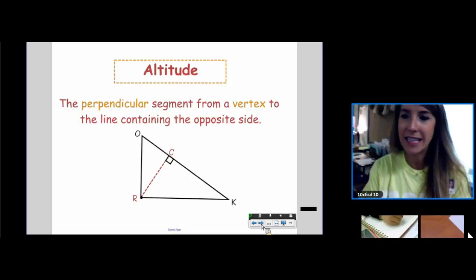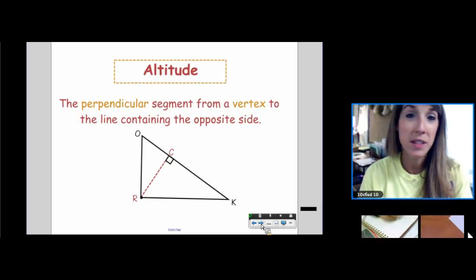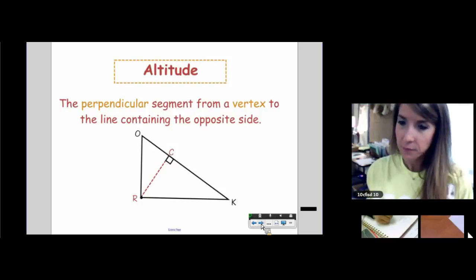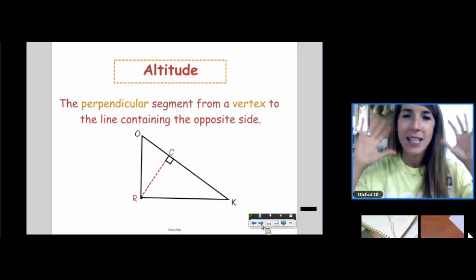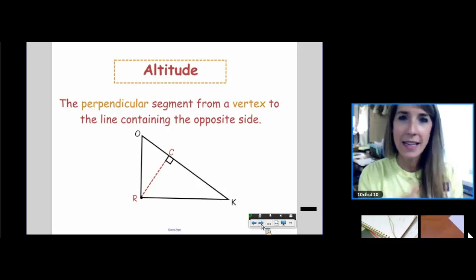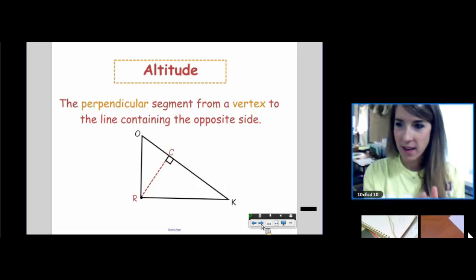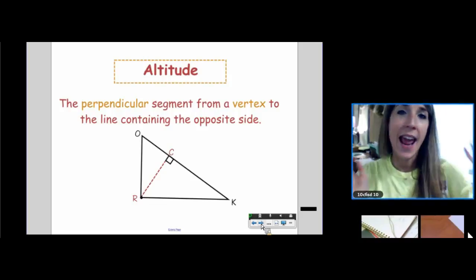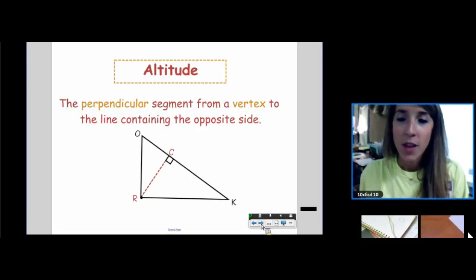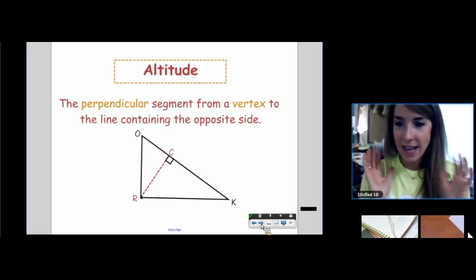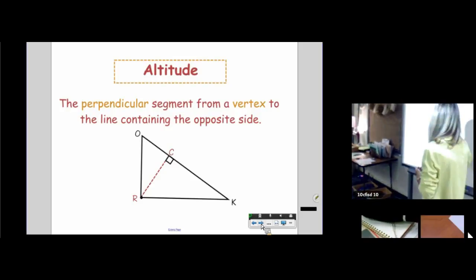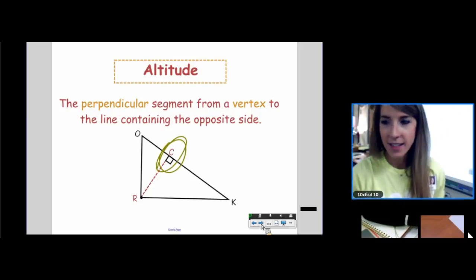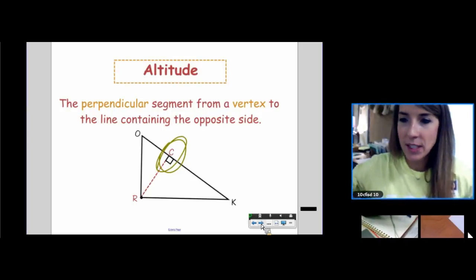Our next word on our list is altitude. This one might be new to us. Underline the word perpendicular. The altitude's job and his job description, his only job, is to be perpendicular to the line containing the opposite side. When it's an angle bisector, you add arcs. When it's a median, you add tick marks. When it's an altitude, you add a square, a box, a 90-degree angle marking, whatever you would like to call it.